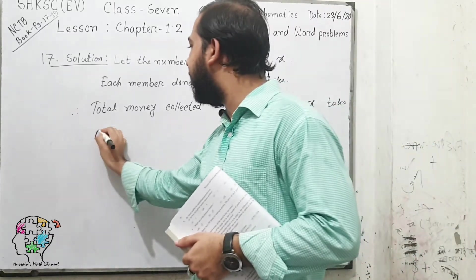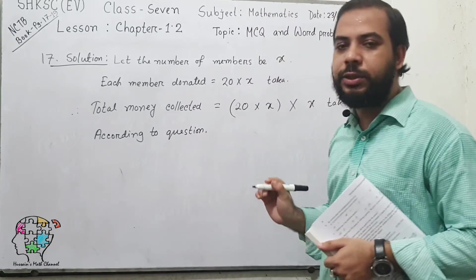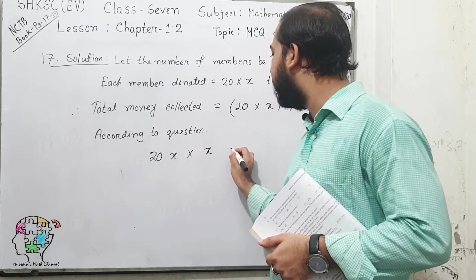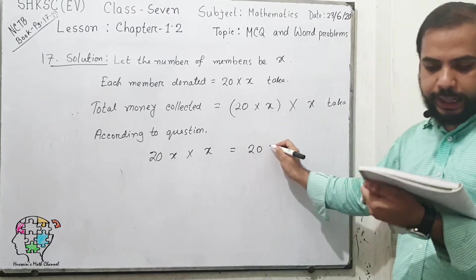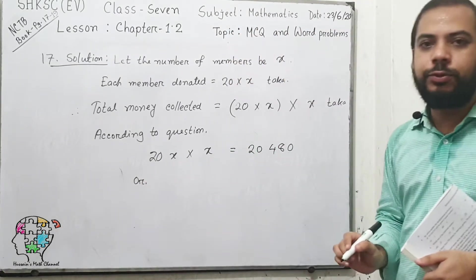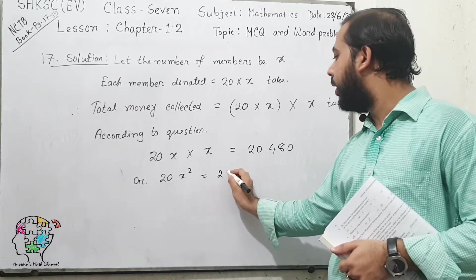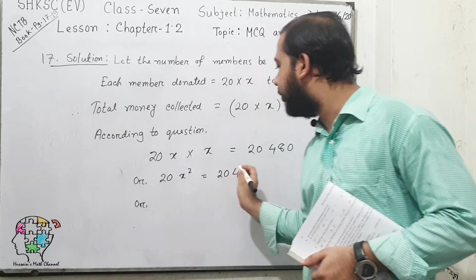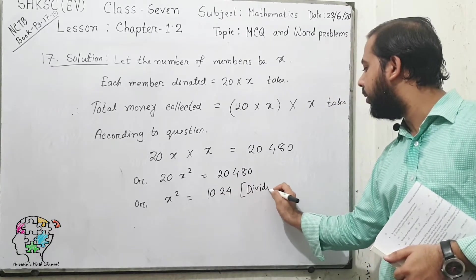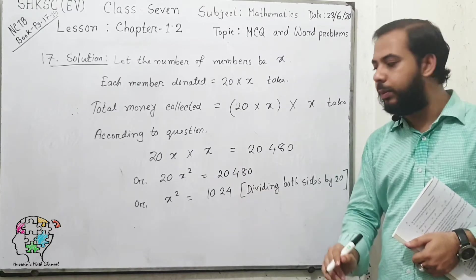According to the question, 20X times X equals 20,480. That is, 20 times X squared equals 20,480. If we divide both sides by 20, we will get X squared equals 1,024.